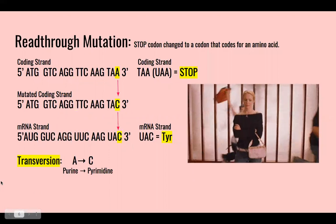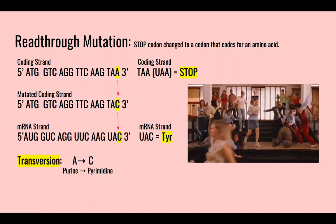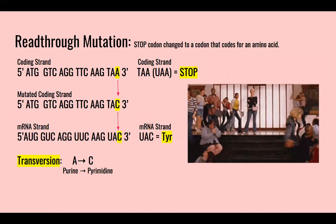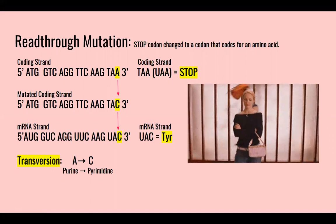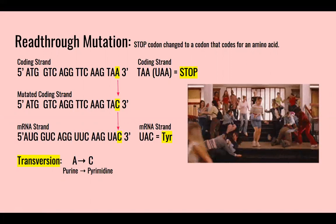Finally, we have a read-through mutation where the stop codon is changed to a codon that codes for an amino acid. In this case, the A base is changed to a C, which changes UAA, a stop codon, to UAC, which codes for tyrosine, an amino acid. The halls at the school in Mean Girls similarly run wild after the burn book is released. In the same way that the sequence will not stop until there's a new stop codon, the students at the school won't stop until principal Duvall says to.